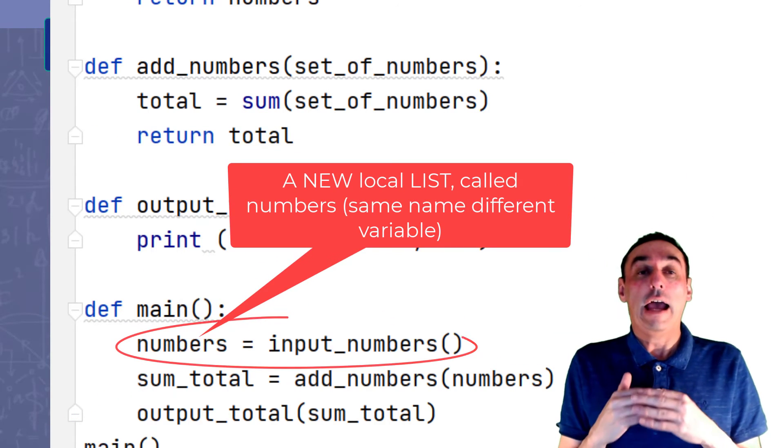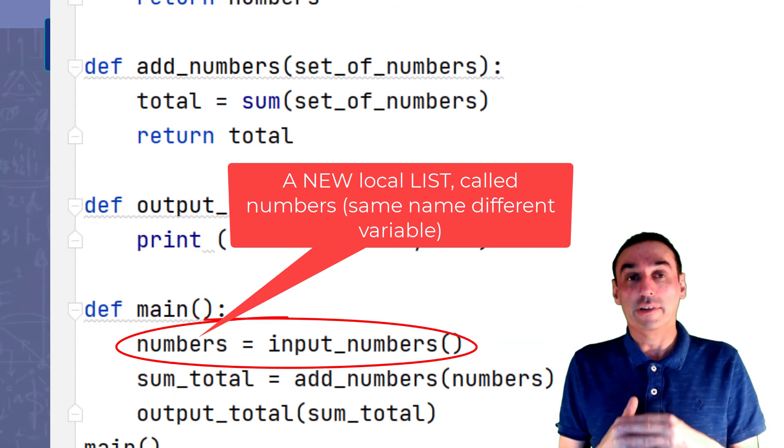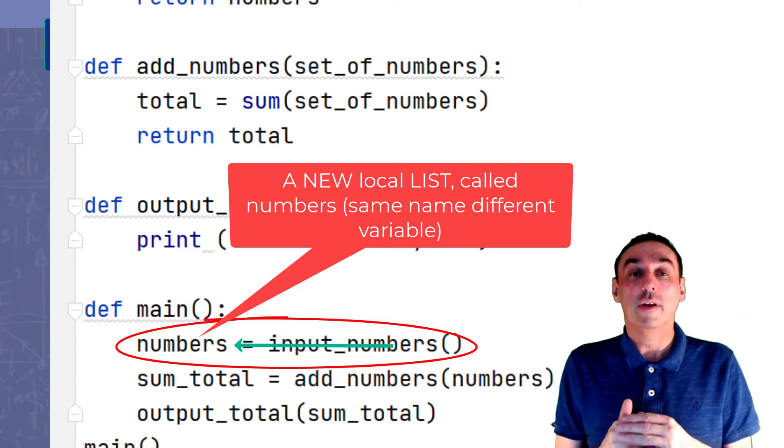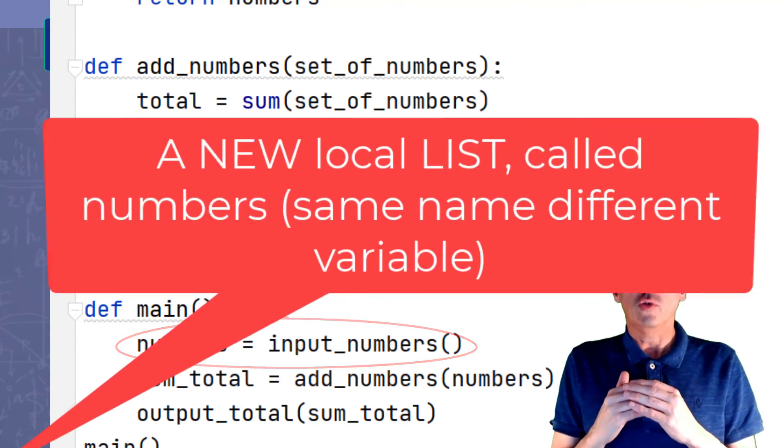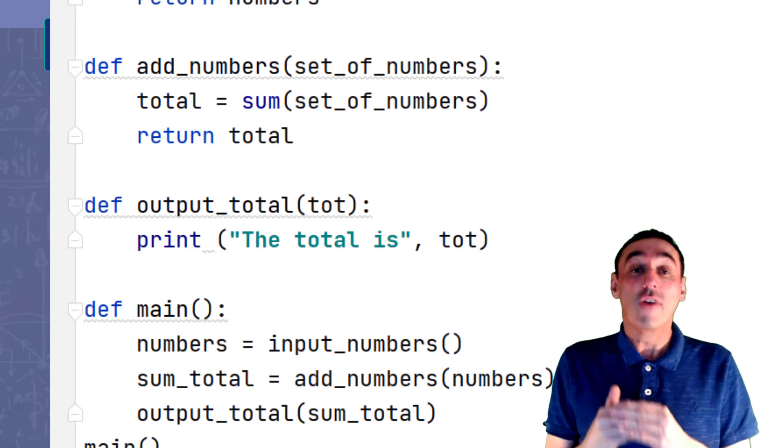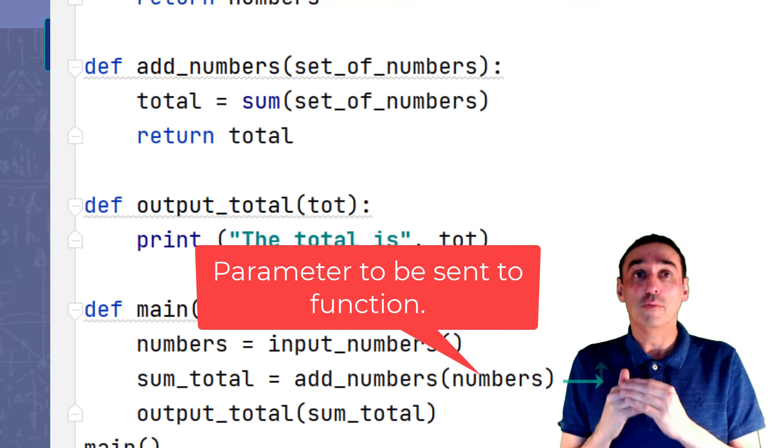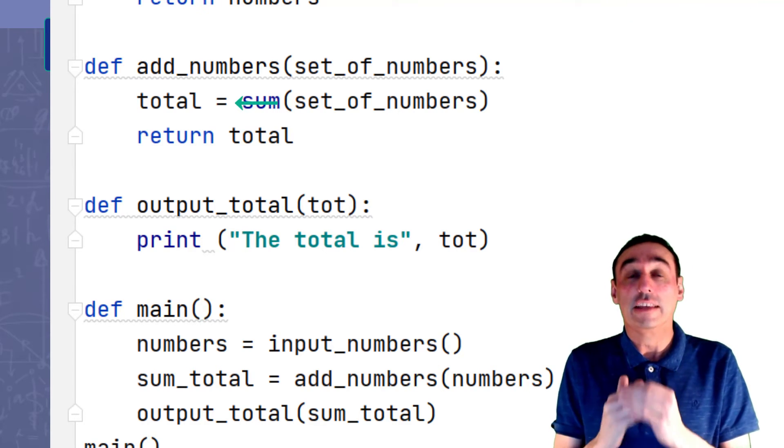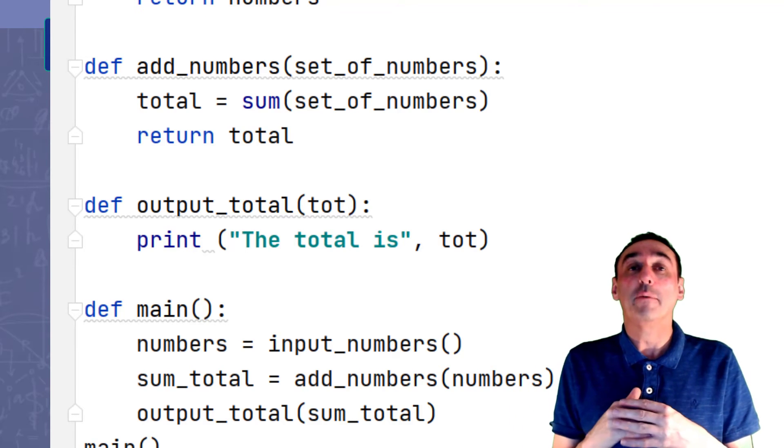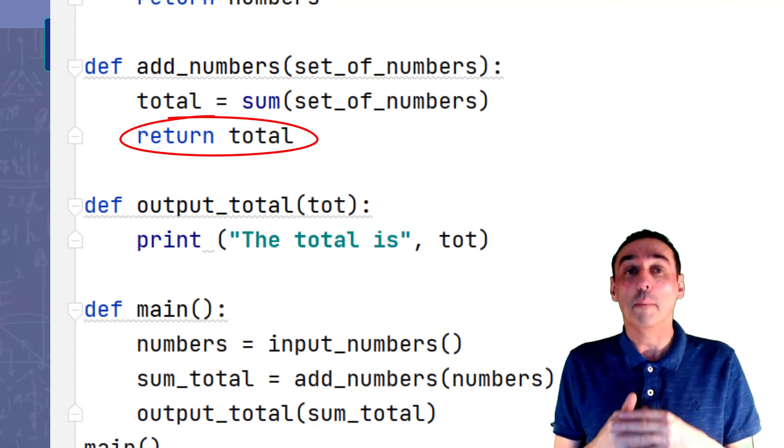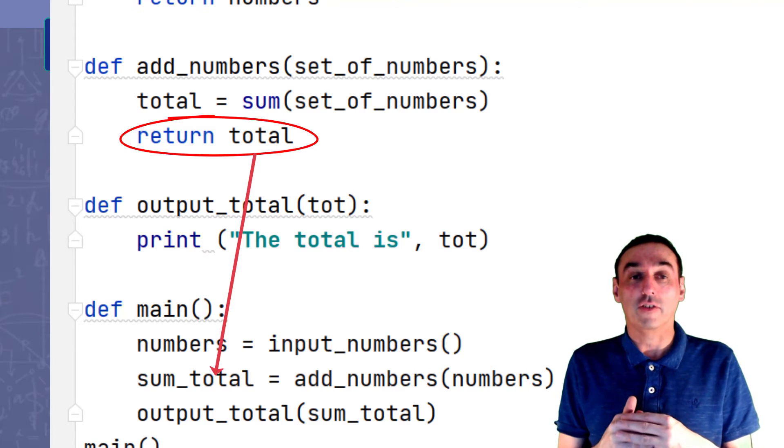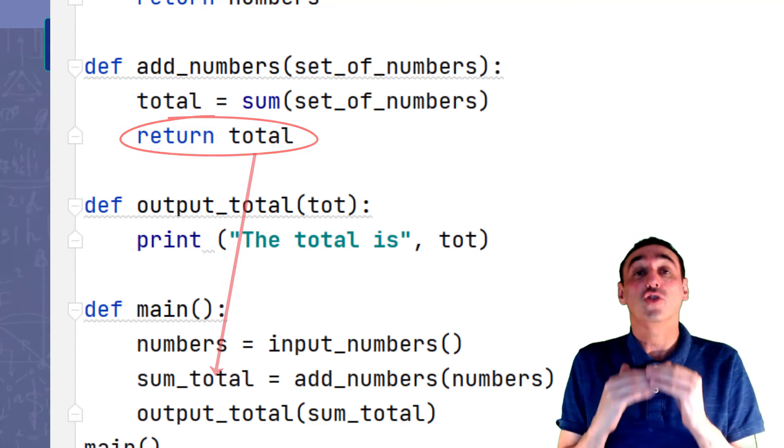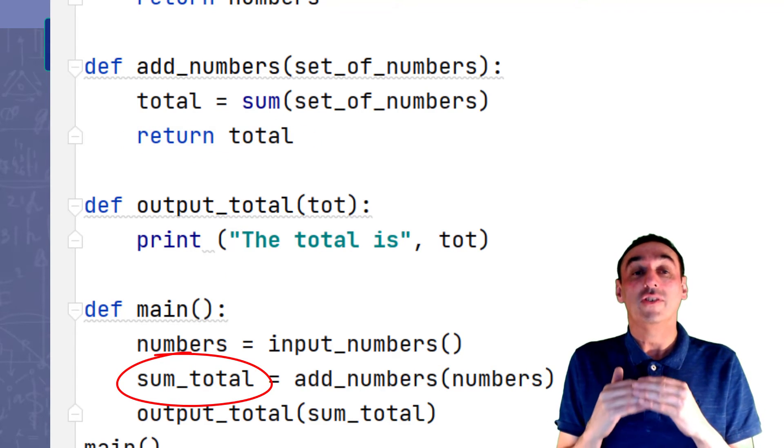We then use that list as a parameter in the add_numbers function to pass to the add_numbers function. Use it as a set of numbers. Total is then set to the sum of those numbers and we would then return the total back to the main function from where it's called from. That is then assigned to the sum_total variable, which is then used as a parameter on the output_total function.